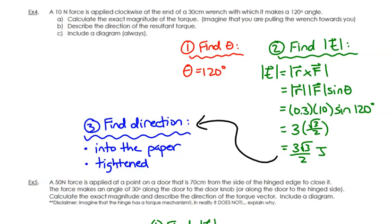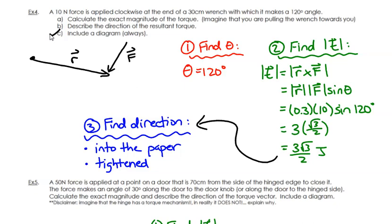Torque example 1: A 10-newton force is applied clockwise at the end of a 30-centimeter wrench, with which it makes a 120-degree angle. Parts: (a) calculate the magnitude of the torque, (b) describe the direction, (c) include a diagram. Starting with the diagram: here is R with the pivot point. Applying the force clockwise means it goes downward. The force vector is drawn, and the angle beta is 120 degrees.